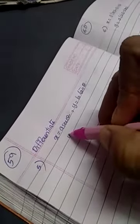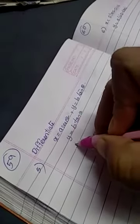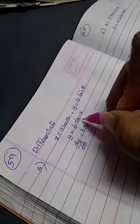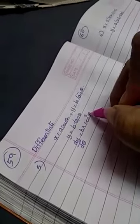What we have to do? Take y. y = b tan θ. What we will do in the next step? We will differentiate y with respect to θ. That is dy/dθ = b is a constant and derivative of tan θ is sec² θ. Let it be equation number 1.